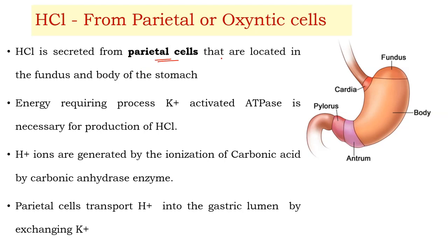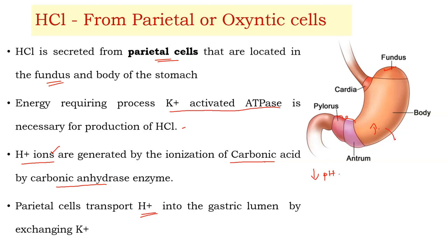HCl is synthesized from the oxyntic cells, stimulated by acetylcholine, gastrin, and histamine. The parietal cells are located mainly in the fundus region. HCl production is an energy-requiring process that needs potassium-activated ATPase. H+ ions are generated by the ionization of carbonic acid, which is produced by carbonic anhydrase enzyme. Parietal cells transport H+ ions into the gastric lumen in exchange for K+ ions.